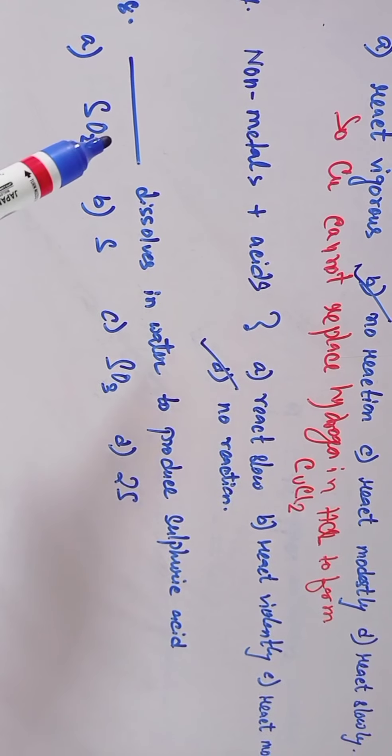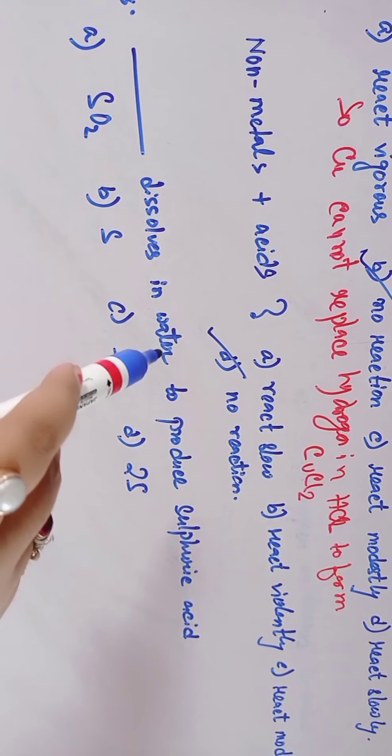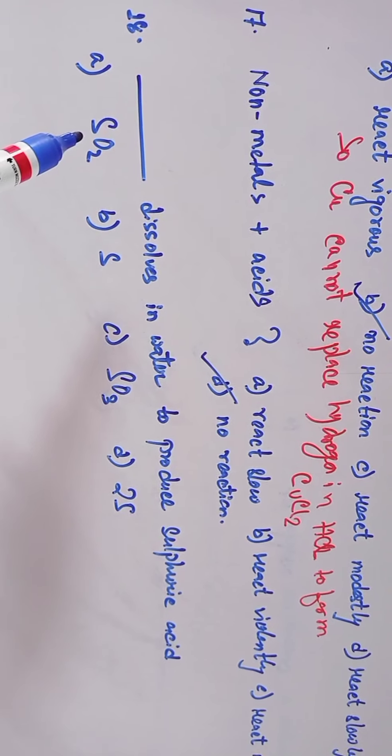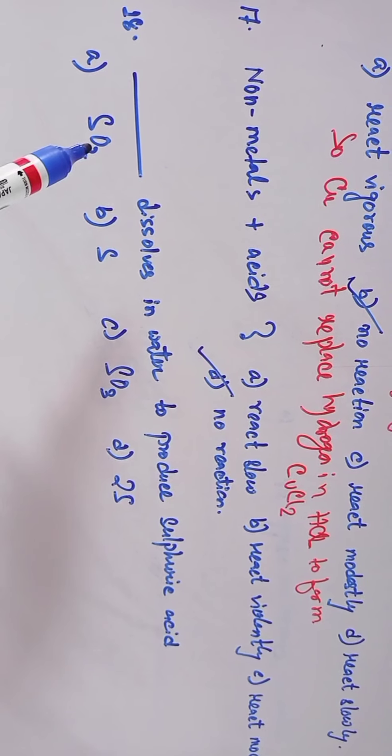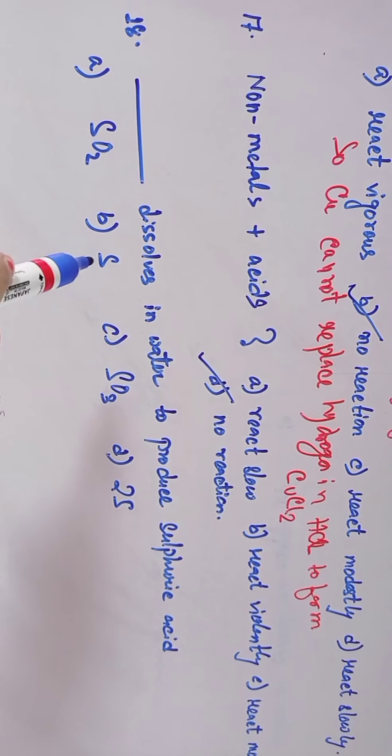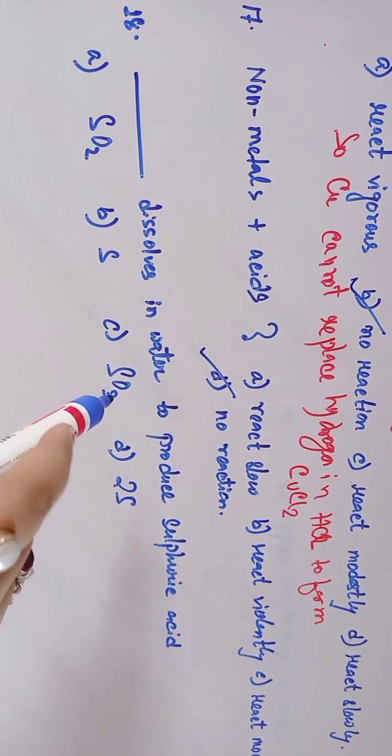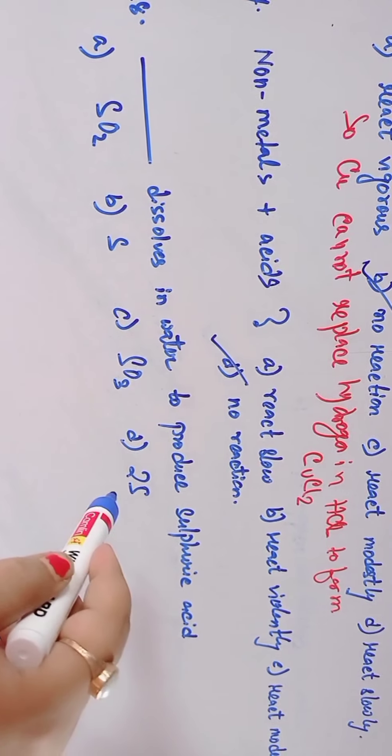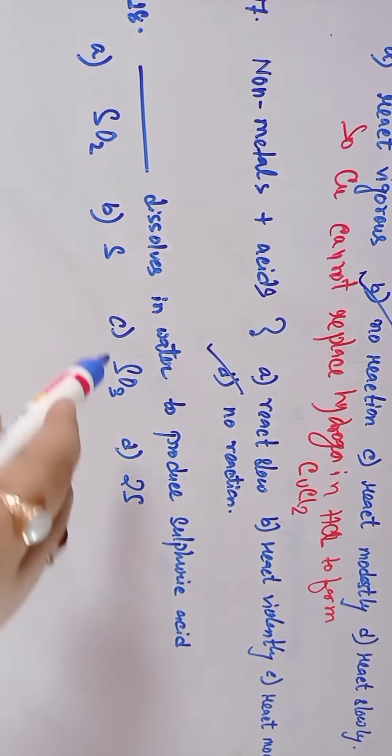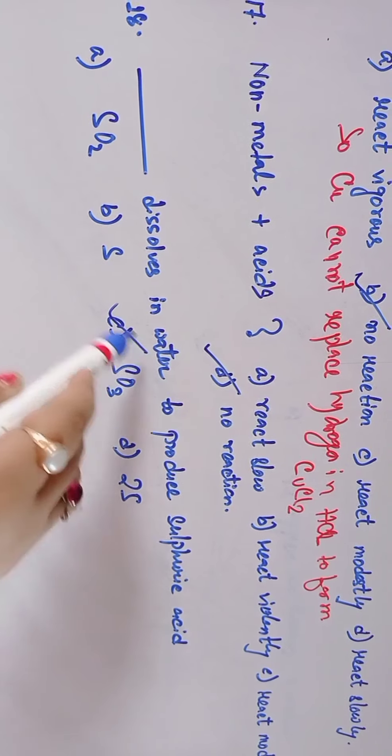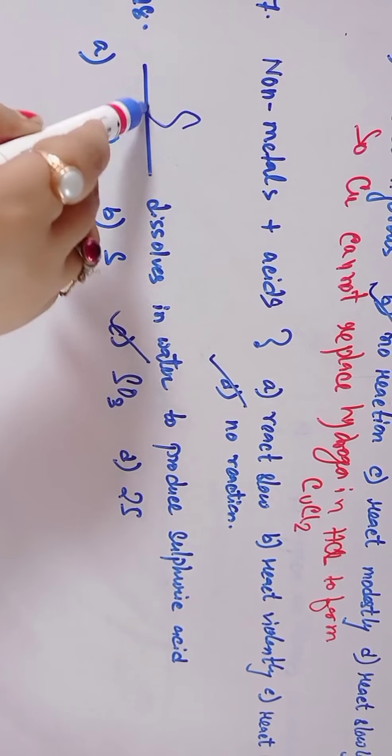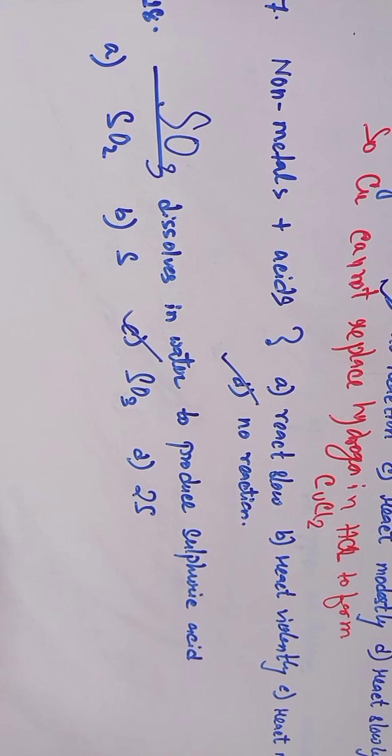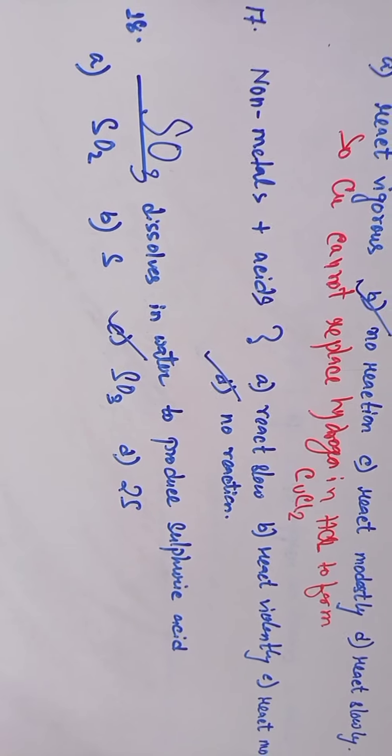Question 18: Dash dissolves in water to produce sulfuric acid. Option A: sulphur dioxide, Option B: sulphur, Option C: sulphite ion, Option D: sulphide. Option C, SO3, sulphite ion, dissolves in water to produce sulfuric acid.